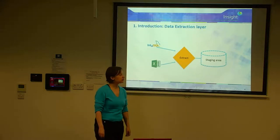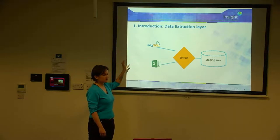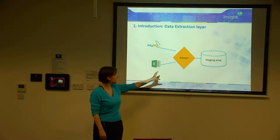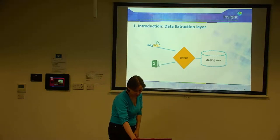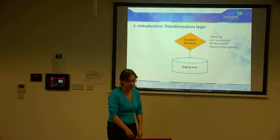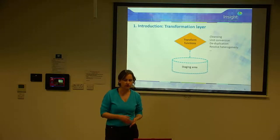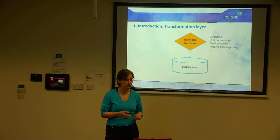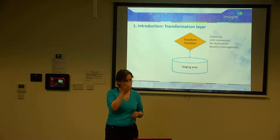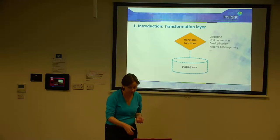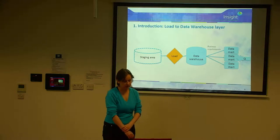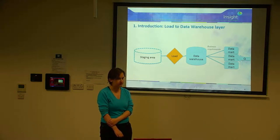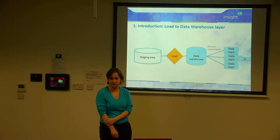Drilling into how traditional ETL works: relational instances and external datasets go through an extraction process into a temporary staging area. While in the staging area, they go through a set of transformation functions — some standard, such as deduplication, and others written specifically for each dataset, such as data cleansing, unit conversion, and resolving heterogeneity, which is when different datasets use different terms to mean the same thing. These transformation functions have to be written manually by a developer. Finally, data is loaded to a data warehouse from which data marts are produced and queried.